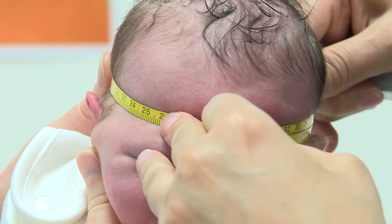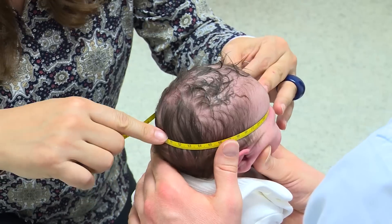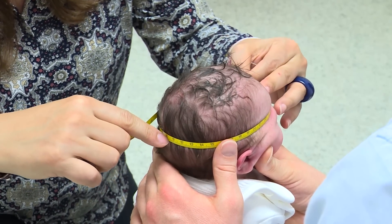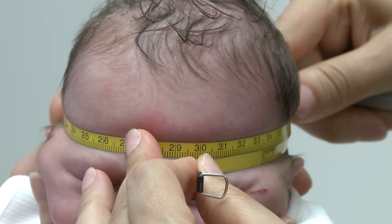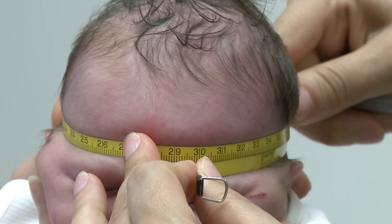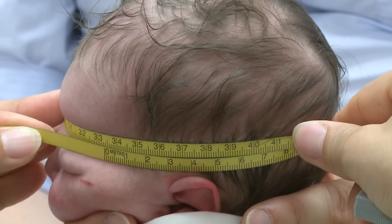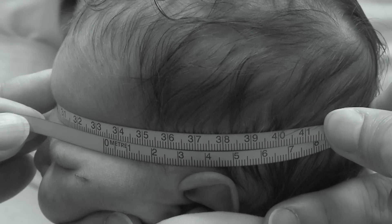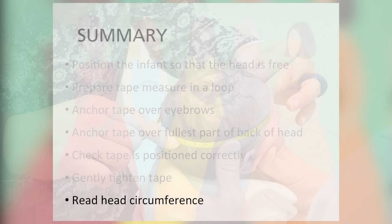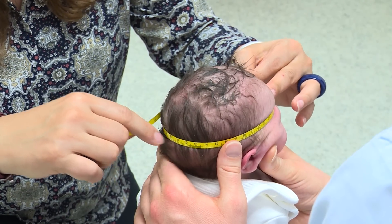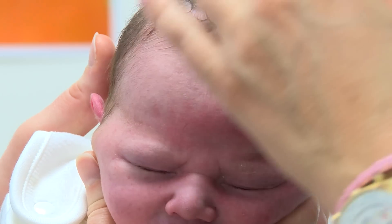Once the tape is in the correct position, the measurer gently tightens the tape to compress any hair and fat. In newborns, a great deal of care should be taken not to tighten the tape too much. The measurer records the measurement to the last completed millimetre. For example, this baby's head shows a measurement slightly in excess of 33.3 centimetres, so the measurement will be recorded as 33.3 centimetres. Once completed, the measurer carefully removes the tape off the baby's head. Any residual pressure marks should disappear within seconds.